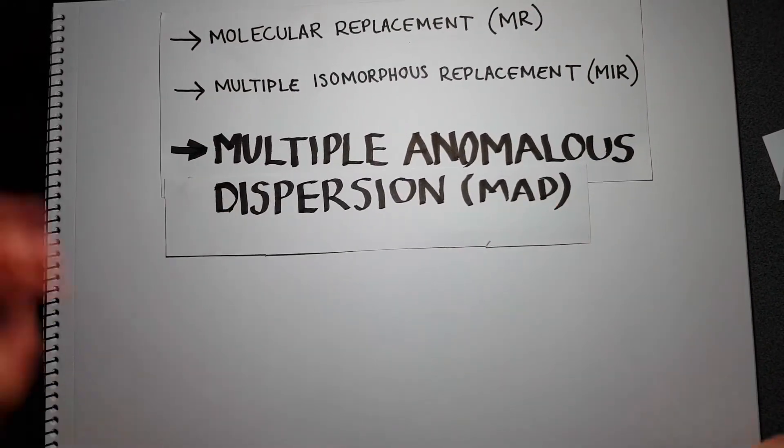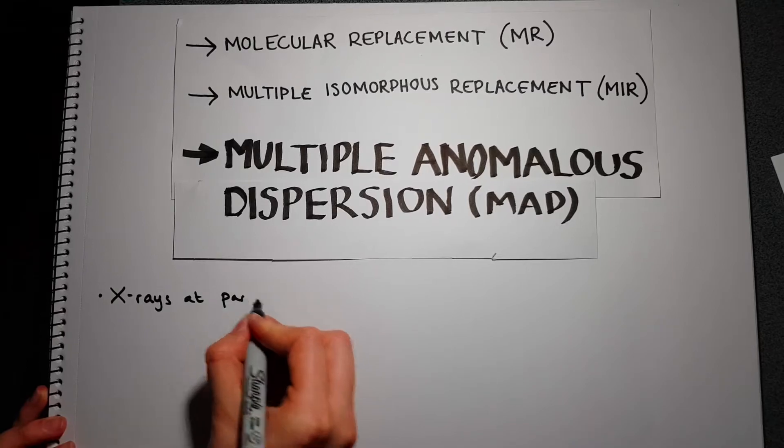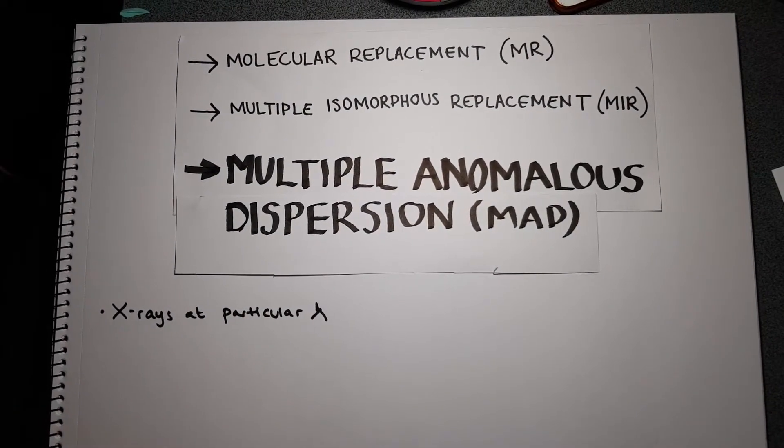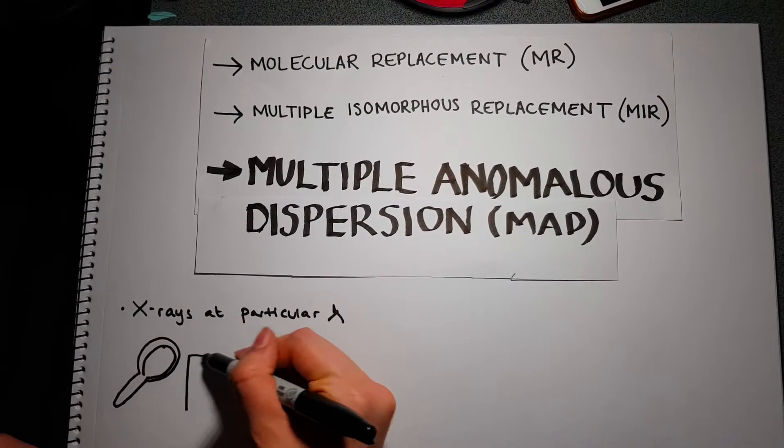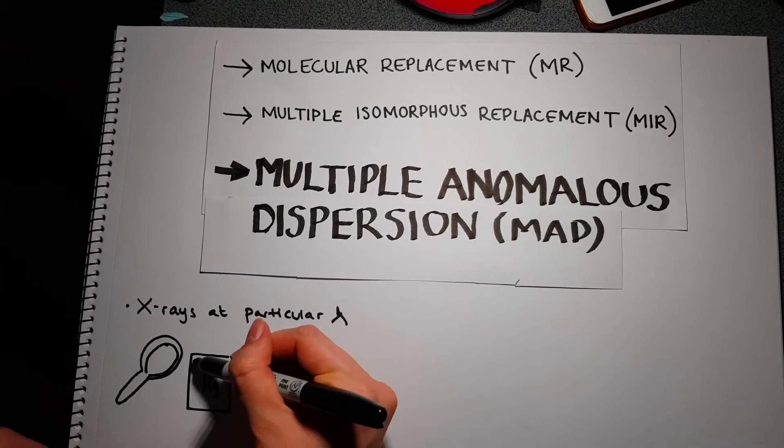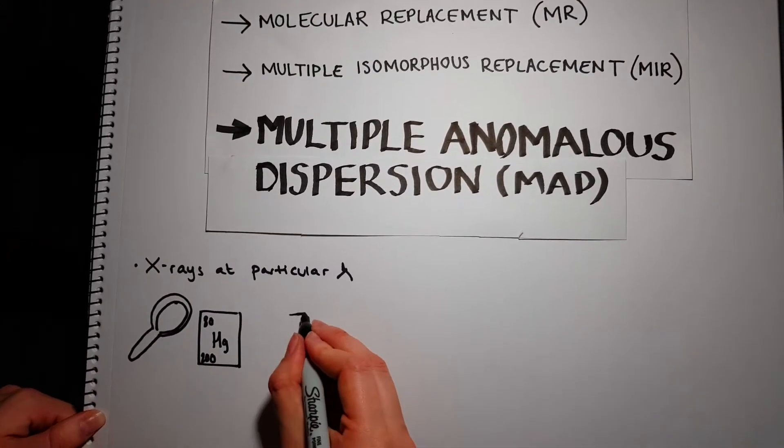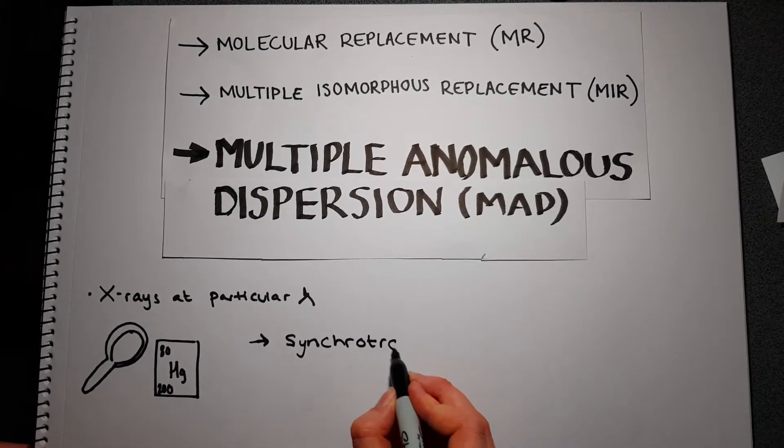Multiple anomalous dispersion (MAD) is similar to multiple isomorphous replacement but is often preferred because MAD uses heavy atoms that absorb X-rays at particular wavelengths. Tuning the wavelengths facilitates locating the heavy atom in the protein, though this requires performing the experiment at a synchrotron where wavelength changes are possible.